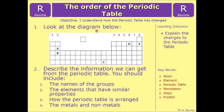Which is, look at the diagram, the same diagram we just had, and describe the information we can get from the periodic table, including the names of the groups, the elements that have similar properties, how the periodic table is arranged, and where the metals and non-metals are.